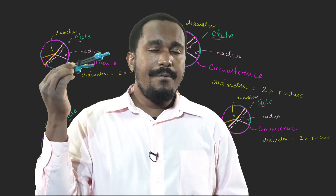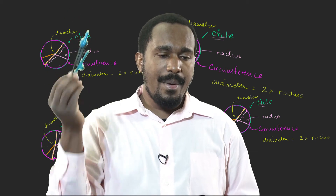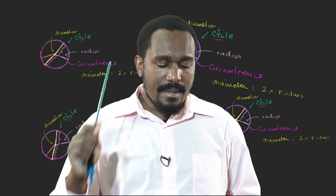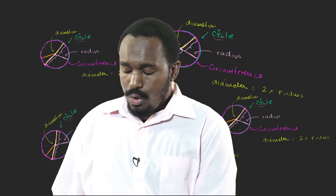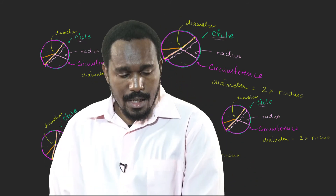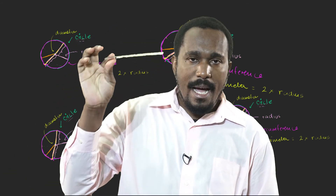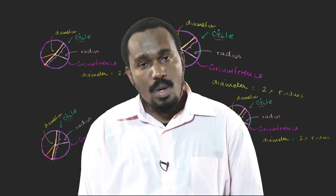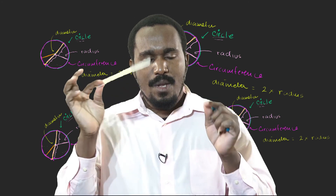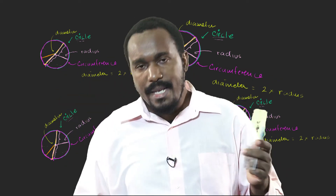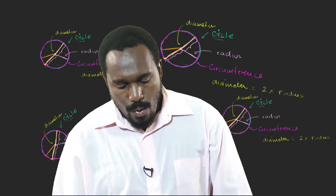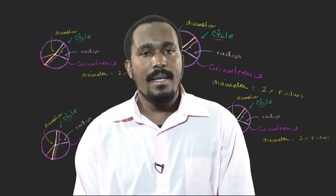You have the pair of compass — this is the pair of compass. You should also have a pencil. You are also expected to have the ruler because it all goes with measuring. So you need all these things as your tools to work out this lesson.